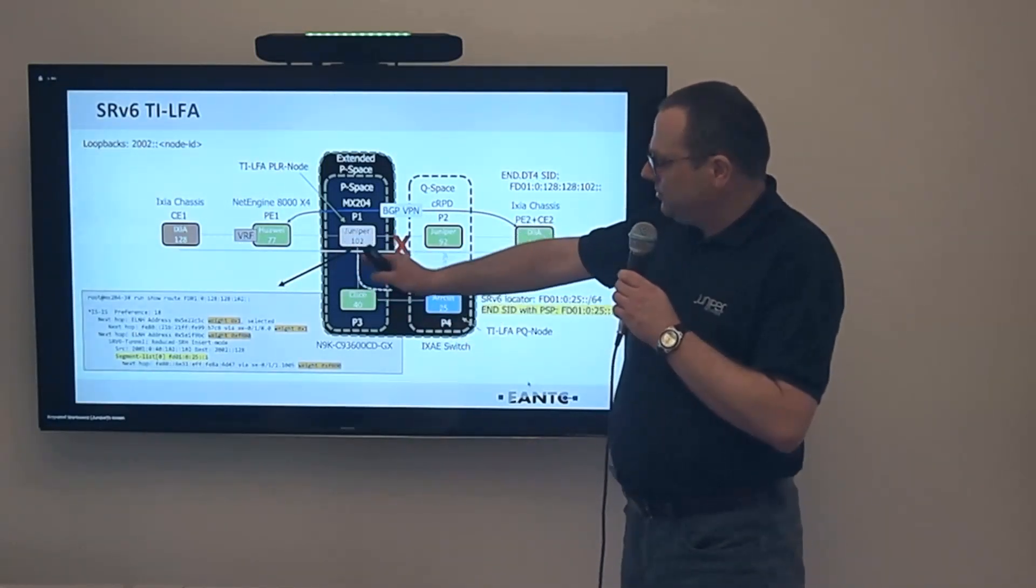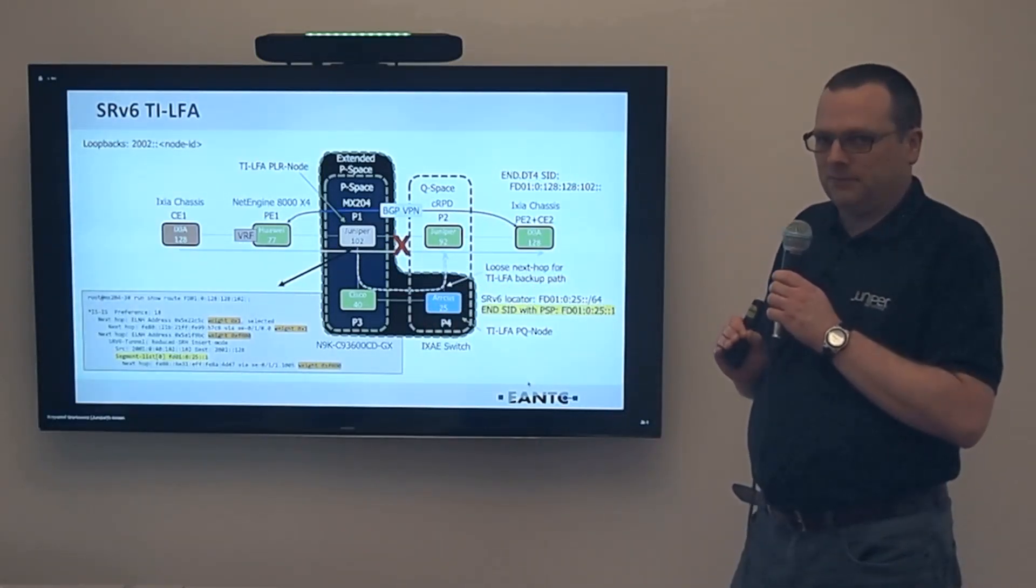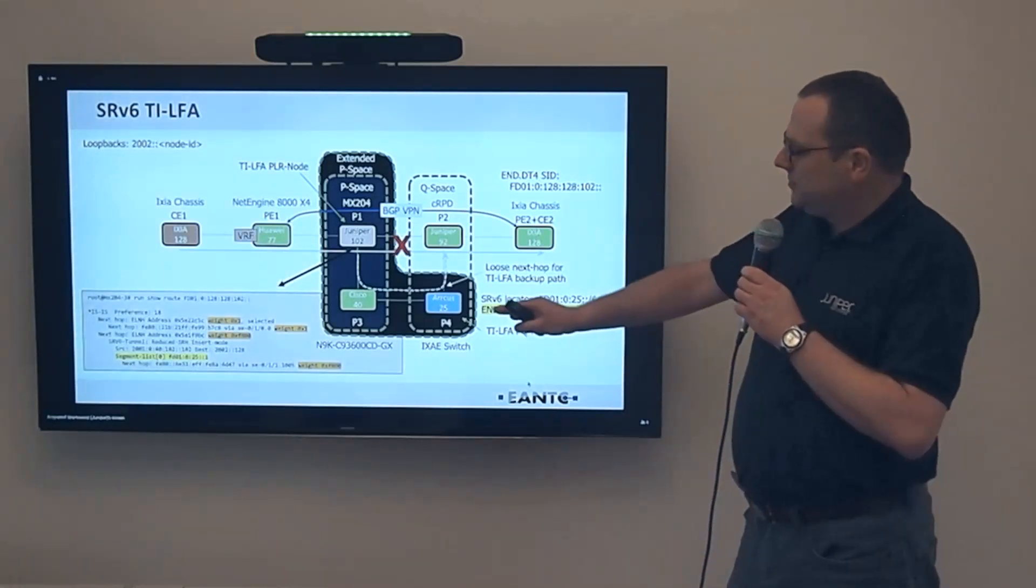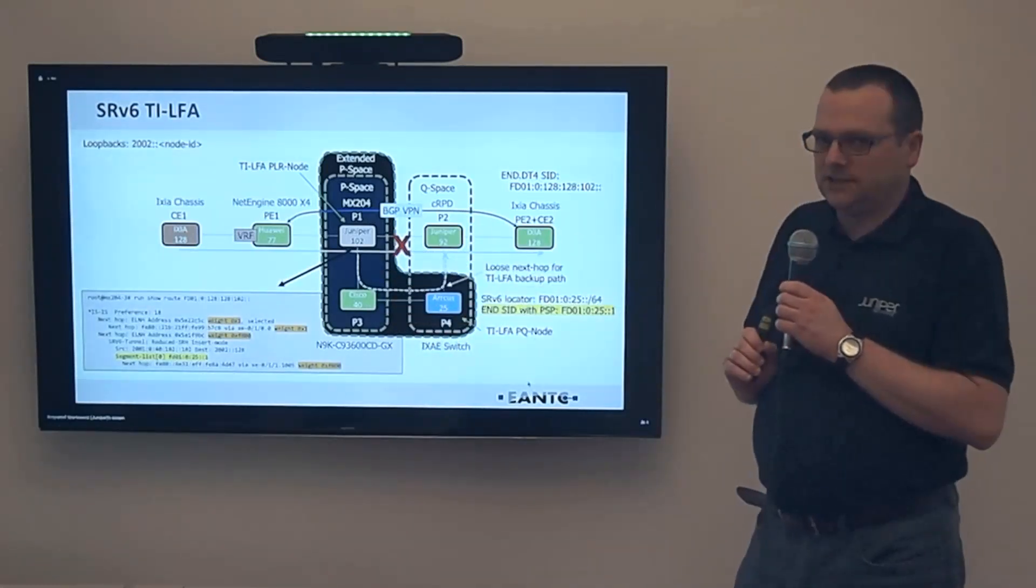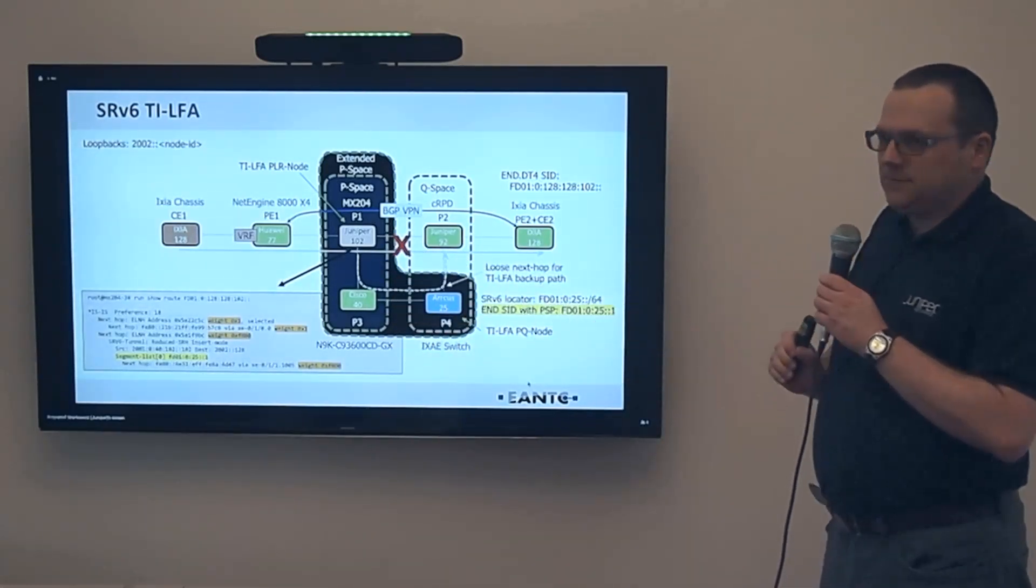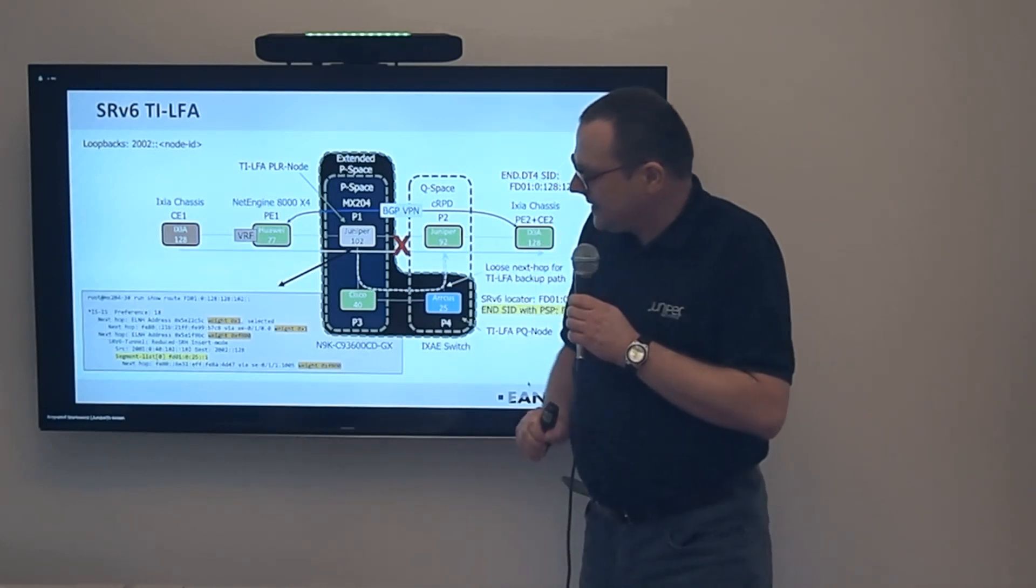It means we can redirect the traffic to Arcus 25 using SID advertised by Arcus 25. Because if we just simply redirect the traffic to Arcus 25, Cisco might turn this traffic back. So we need to put some SID. We are putting the end SID advertised by Arcus 25. When this packet arrives to Arcus 25, Arcus 25 performs the PSP function that was discussed before. It removes the SID or removes the segment routing extension header and sends the traffic to Juniper 92 and to Ixia 128 without extension header.